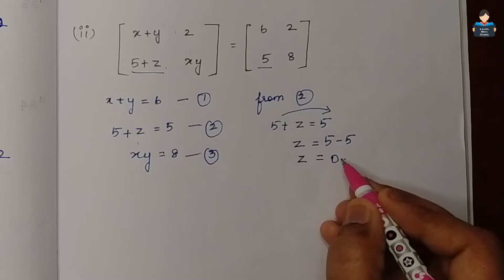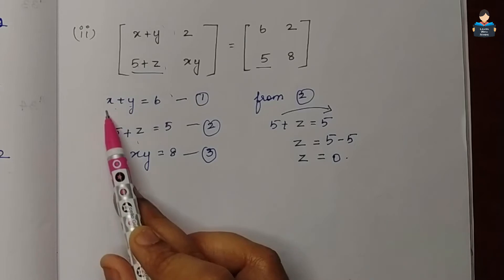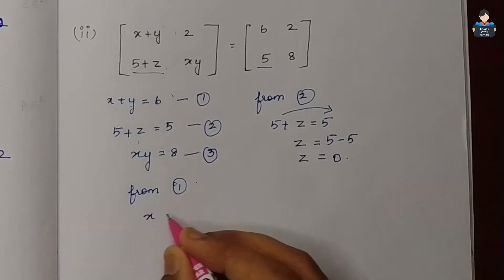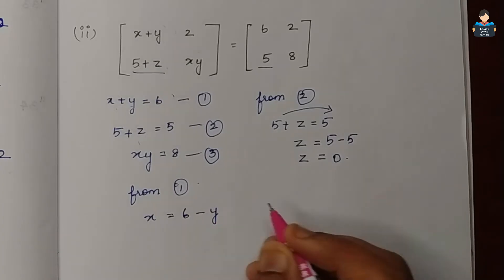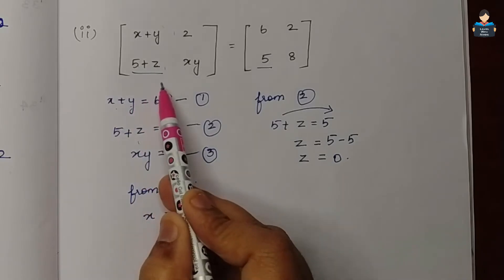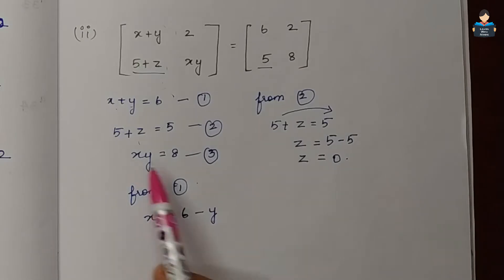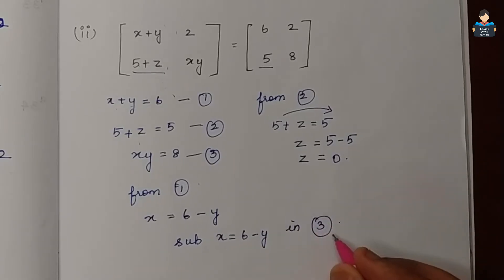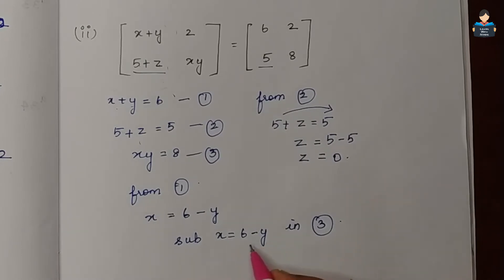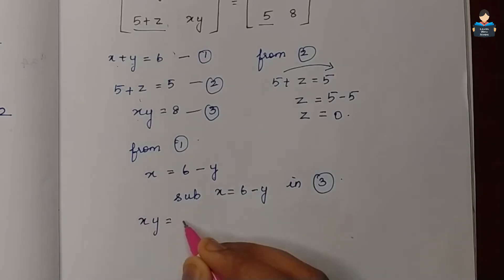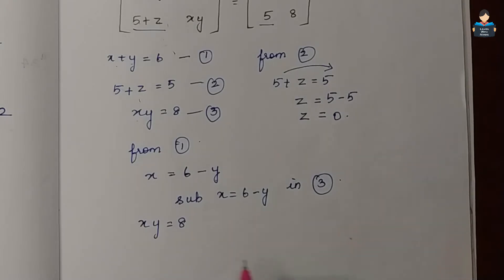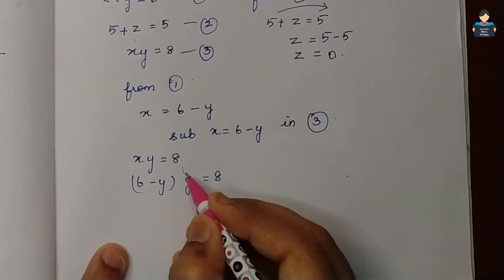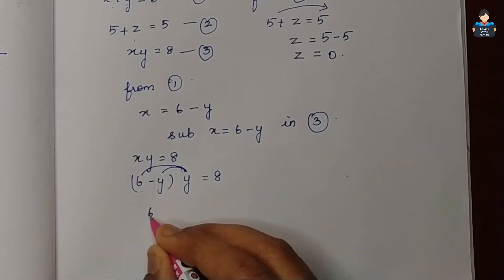So z value is 0. Now from equation 1, x plus y is equal to 6, so x is equal to 6 minus y. I will now substitute x equals 6 minus y into equation 3. In equation 3, xy equals 8, so replacing x we get 6 minus y multiplied by y equals 8, which gives 6y minus y squared equals 8.